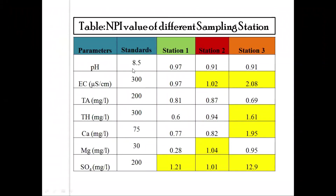The NPI value of pH was found to be less than one in all sampling stations. The NPI value of electrical conductivity is less than one in station one but greater than one in stations two and three. Total alkalinity is less than one in all sampling stations. Total hardness NPI value is less than one in stations one and two but greater than one in station three. Similarly for calcium, whereas magnesium is less than one in stations one and three.